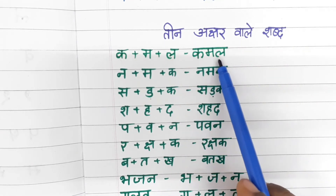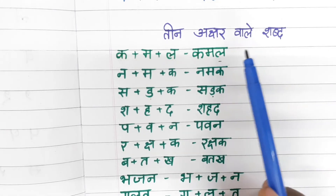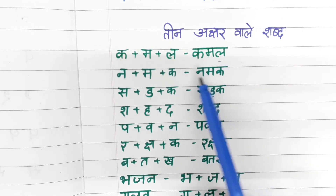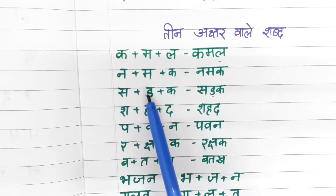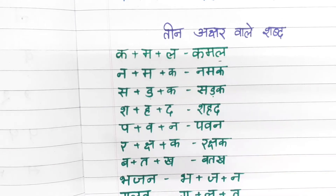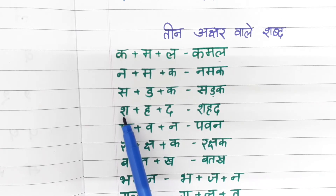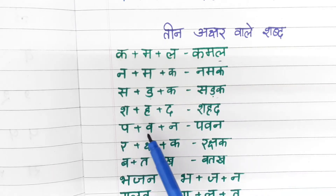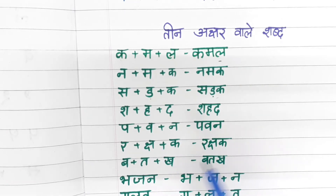The third letter word will be a little half sound. How to read: kamal — these two letters come with full sound. Na, ma, ka — namak. Sa, da, ka — sadak. Sha, ha, da — shad. Pa, va, na — pavan. Ra, sha, ka — rakshak. Ba, ta, ka — batak. Ba, ja, na — bhajan.